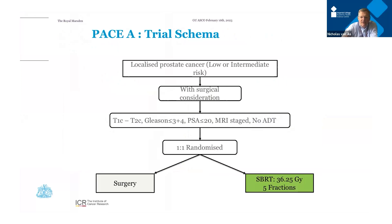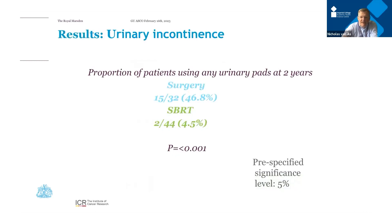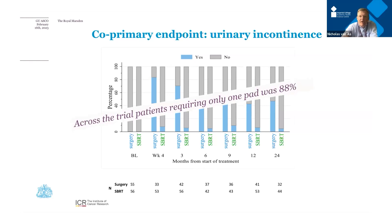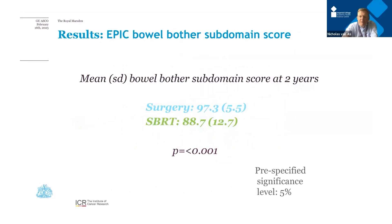Men with low or intermediate risk prostate cancer — most intermediate risk — were randomized one-to-one between robotically-assisted surgery or SBRT five fractions. For the first co-primary endpoint, continence measured by urinary pad use at two years: 46% of men required at least one pad two years after surgery, versus 4.5% after SBRT — a highly statistically significant difference. Surgery improved slightly over time; SBRT remained very low and constant. Most men after surgery required just one pad a day, but this is very important for decision-making before radical treatment.